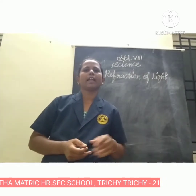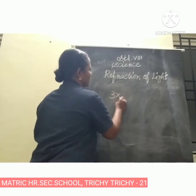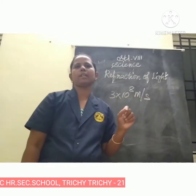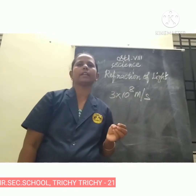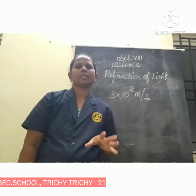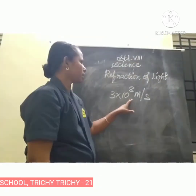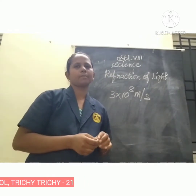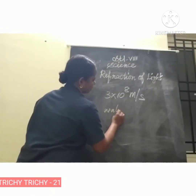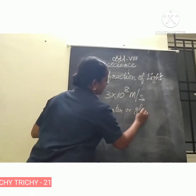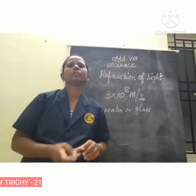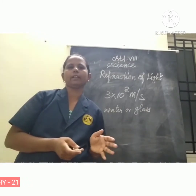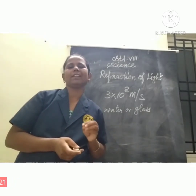Through air, light travels with a speed of 3 into 10 power 8 meters per second. But it cannot travel with the same speed in water or glass medium. Because denser mediums such as water and glass offer more resistance to the light rays.